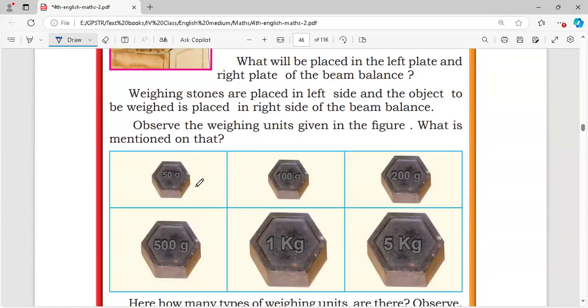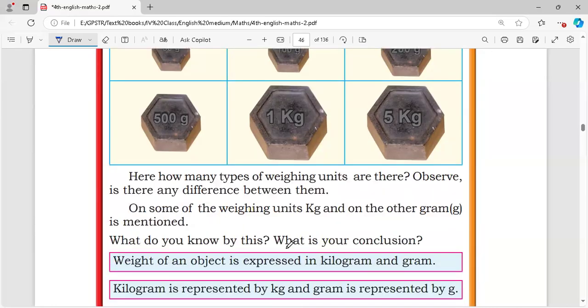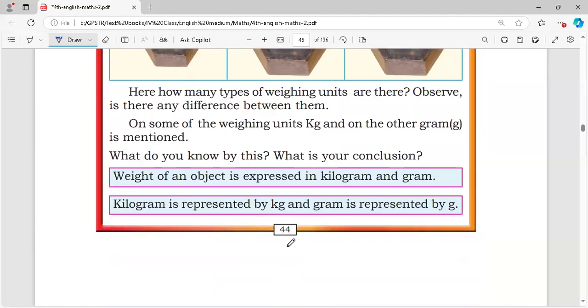Weighing units include 50 gram, 100 gram, 200 gram, 500 gram, 1 kg, 5 kg. Weight of an object is expressed in kilograms and grams. Kilogram is represented by kg and gram is represented by g.